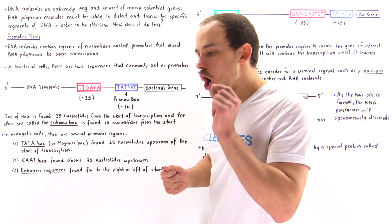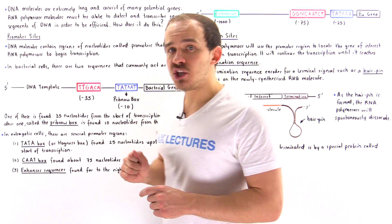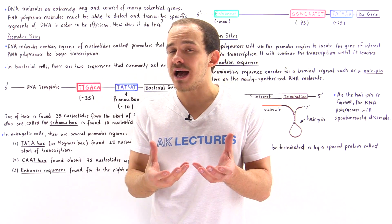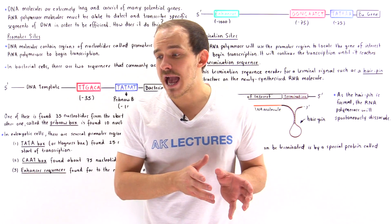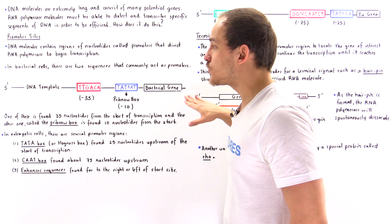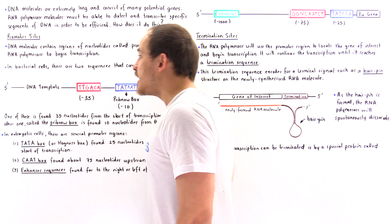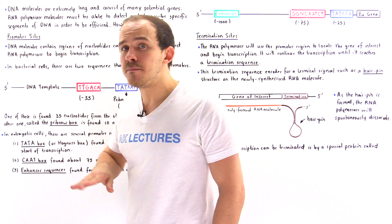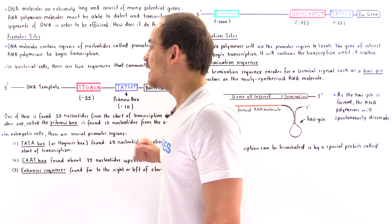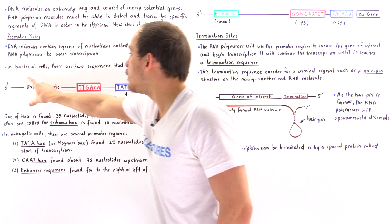RNA polymerase reads our DNA molecule from the 3' to 5' end and synthesizes from the 5' to 3' end. As it travels along the double-stranded DNA molecule, it does not use the top strand as the template but uses the complementary DNA strand as the template.